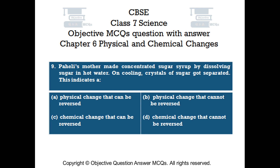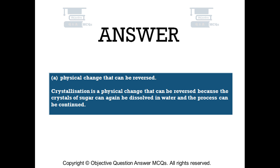Question number 9. Pahali's mother made concentrated sugar syrup by dissolving sugar in hot water. On cooling, crystals of sugar got separated. This indicates: Option A: A physical change that can be reversed. Option B: A physical change that cannot be reversed. The right answer is Option A: A physical change that can be reversed. Crystallization is a physical change that can be reversed because the crystals of sugar can again be dissolved in water and the process can be continued.